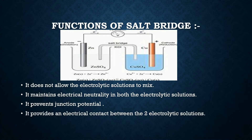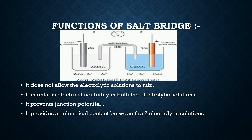The fourth and last function is that it provides an electrical contact between the two electrolytic solutions. As we know, electrons flow from anode to cathode, but there is no direct conduction between the ZnSO4 and CuSO4 — there is no contact between these two half cells. Therefore, to provide contact between these two half cells, we need a salt bridge, through which there is a flow of ions in these electrolytic solutions.